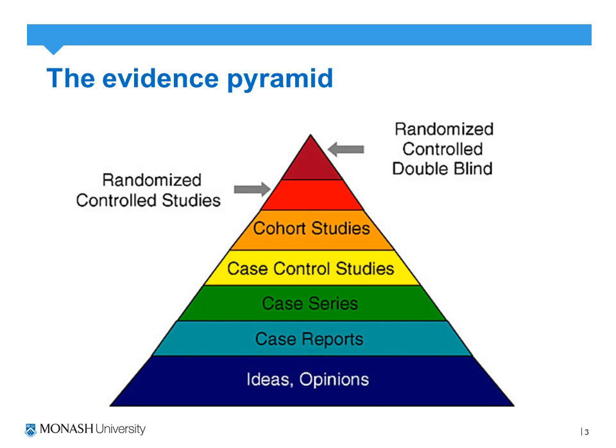Selection bias is fairly difficult to account for in a cohort study, as the patients are often exposed or not exposed to a particular intervention or exposure. So there is no randomisation process per se.